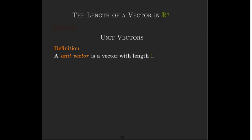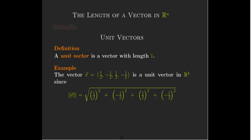So a special type of vector is a unit vector. And so a unit vector has length one. And here's an example of a unit vector. It's one-half, negative one-half, one-half, negative one-half. So it belongs to R4. And if I calculate its length using our formula, the square root of the sum of the squares, I get the square root of one-fourth plus one-fourth plus one-fourth plus one-fourth, which is the same thing as the square root of one, which is one.